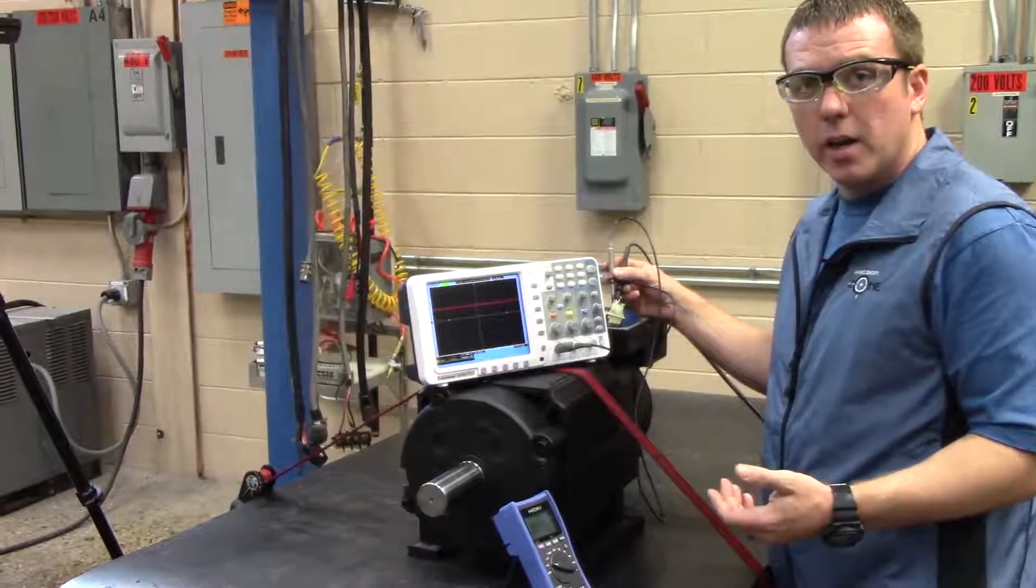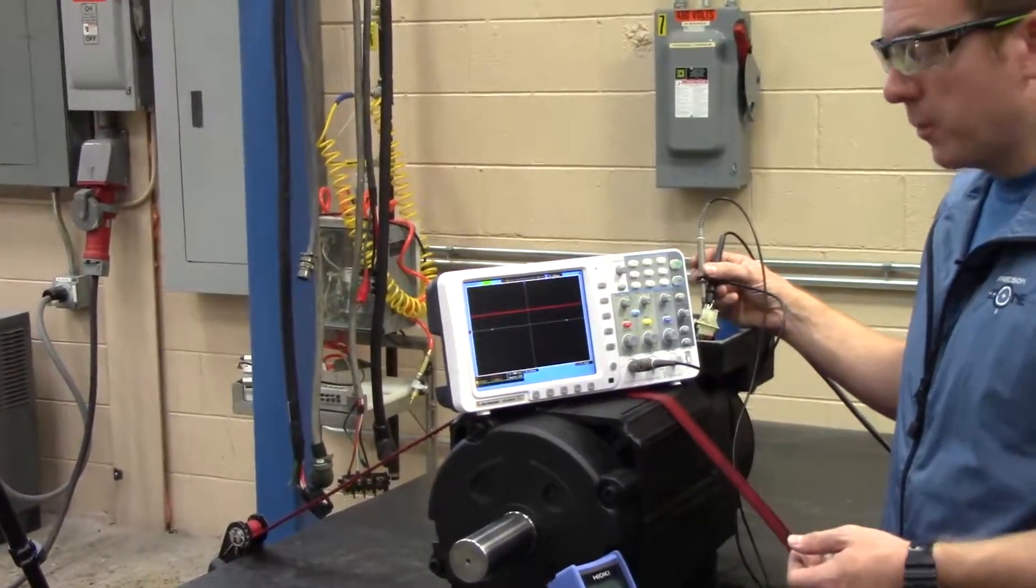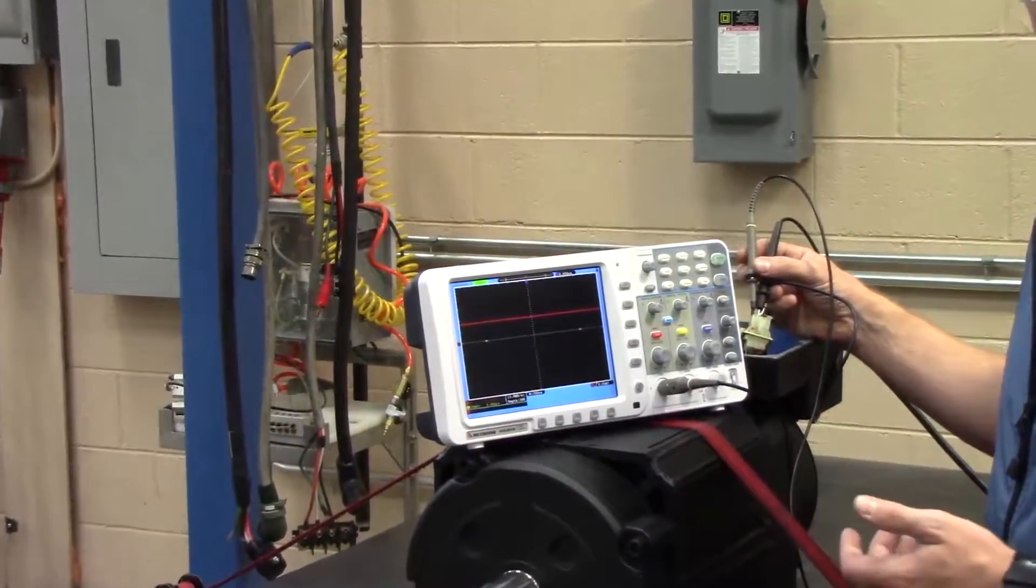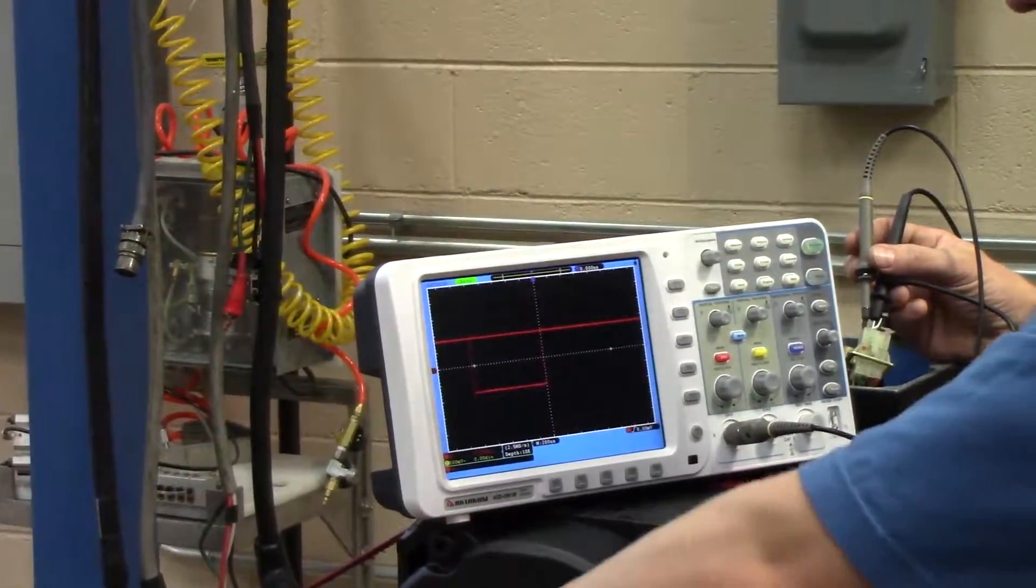Now if your machine is running, but it's not orientating, it may have lost its Z signal. Now Z is a lot harder to find than A and B, but keep trying and adjusting your scope.